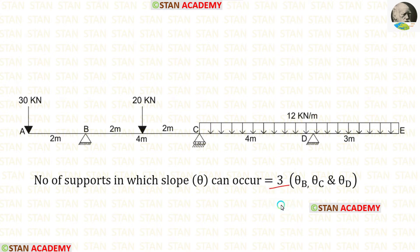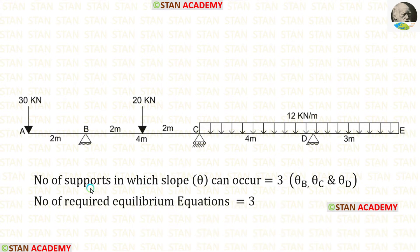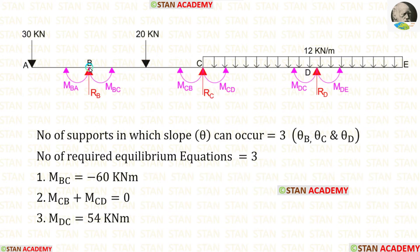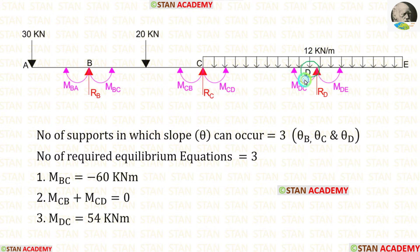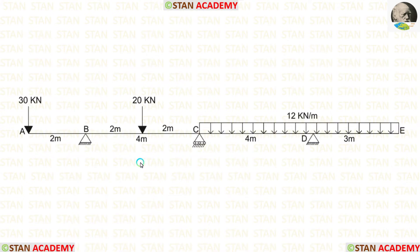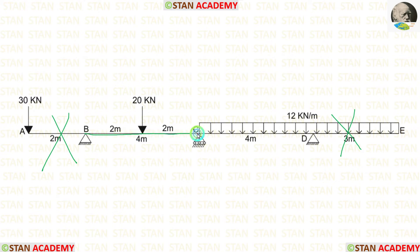If we calculate these three unknowns, we can easily find the final moments. To calculate them, we need three equilibrium equations. We have already calculated MBC — that is the first equilibrium equation. In joint C, MCB plus MCD equals zero — that is the second. In joint D, we have already calculated MDC — that is the third. No need to calculate fixed end moments in the overhanging spans; only in spans BC and CD.